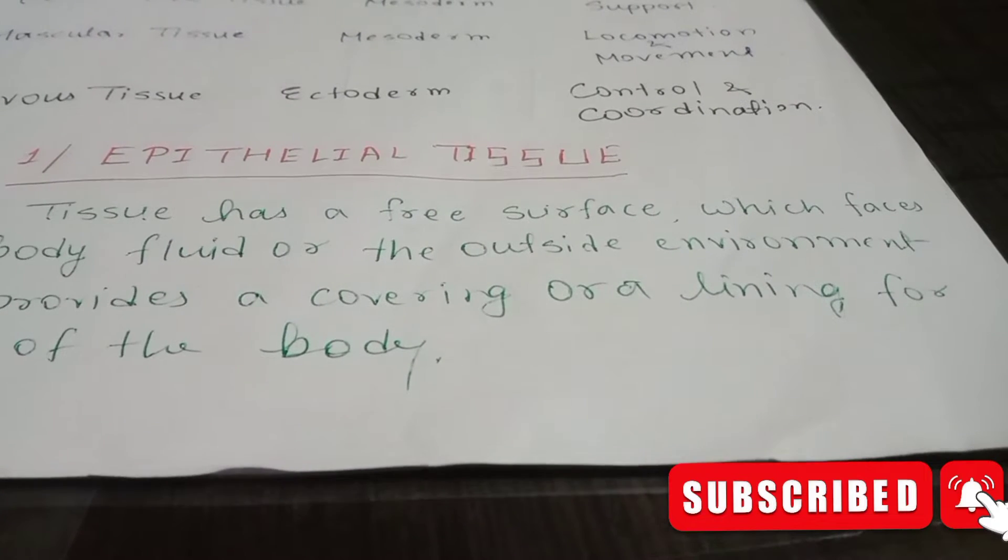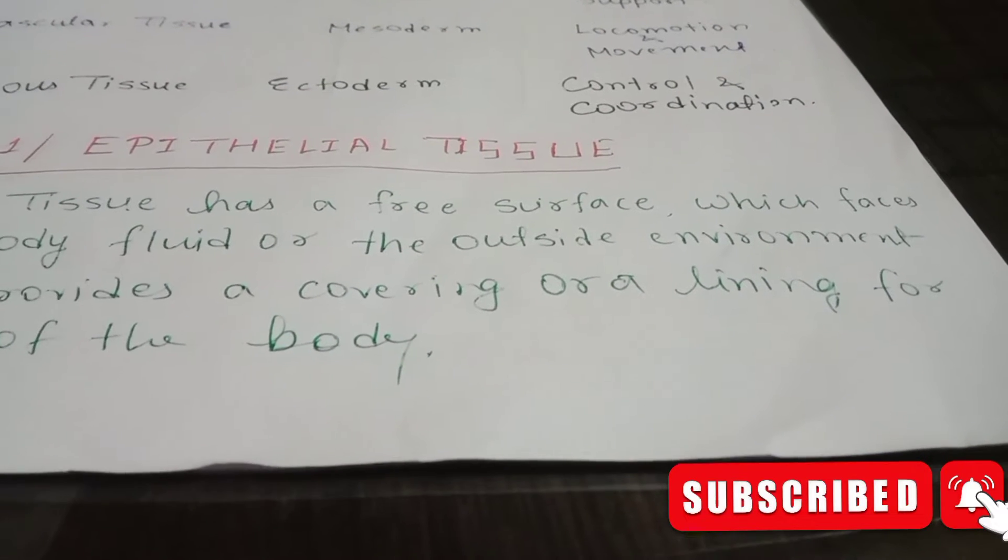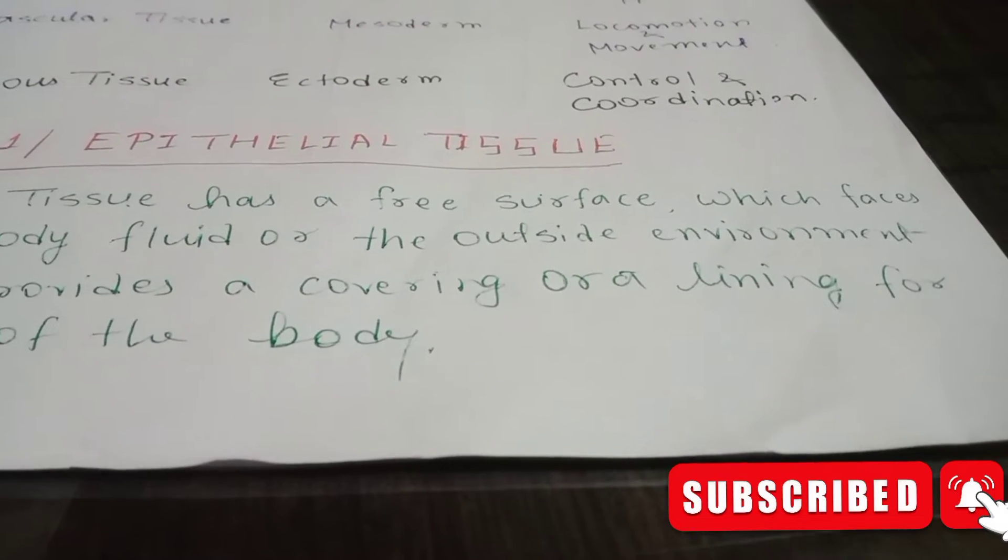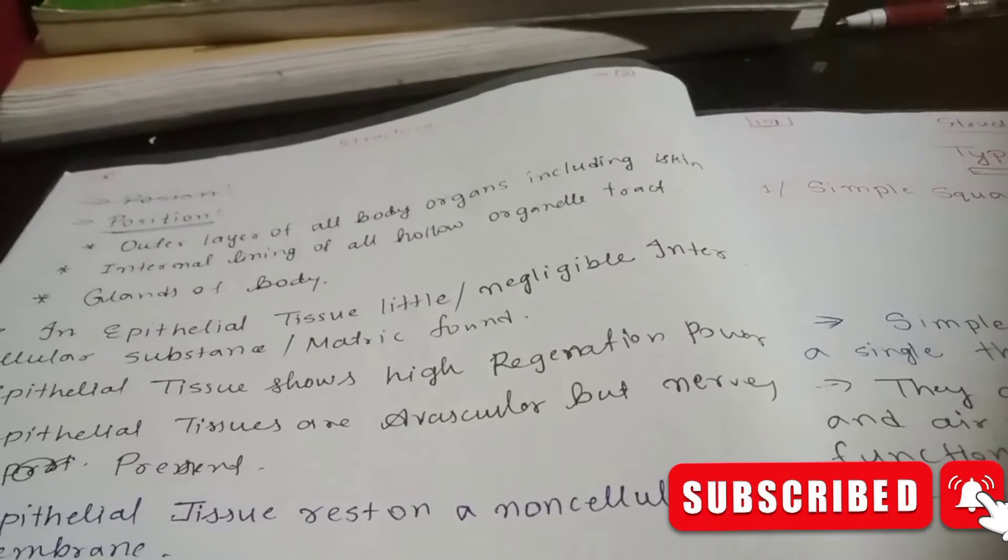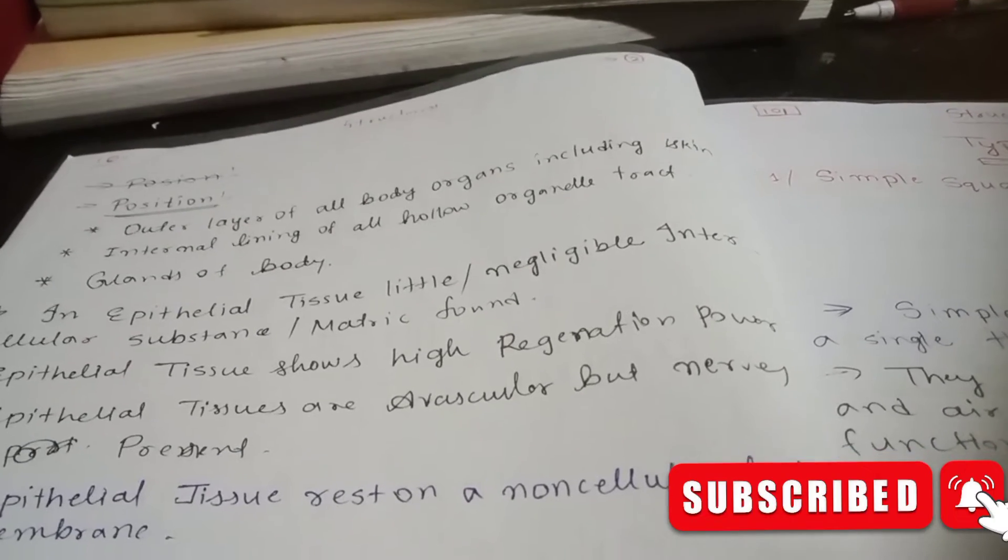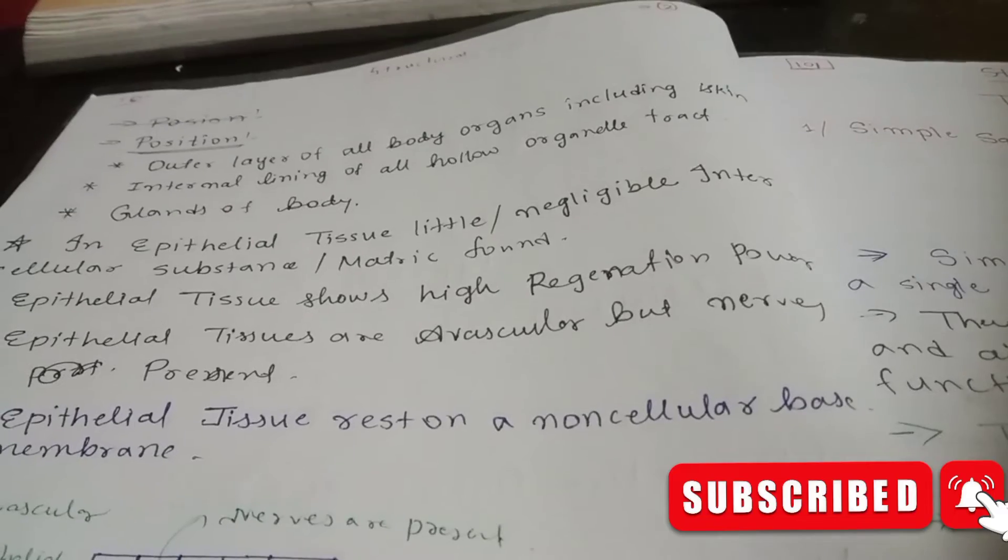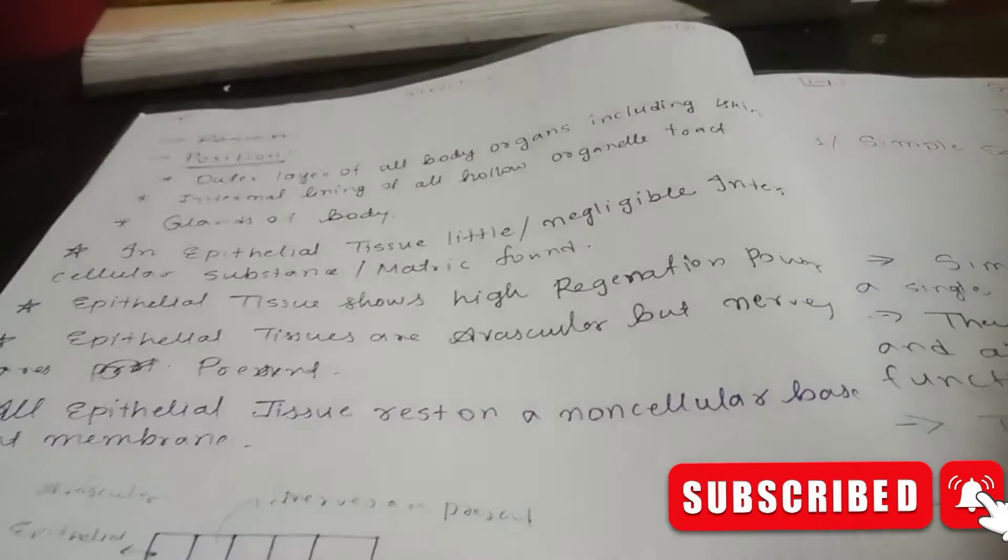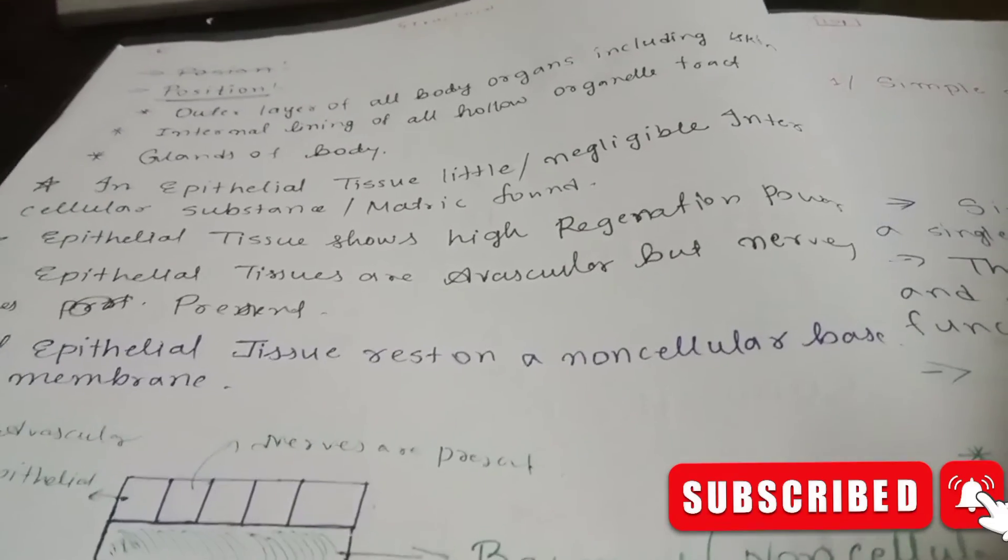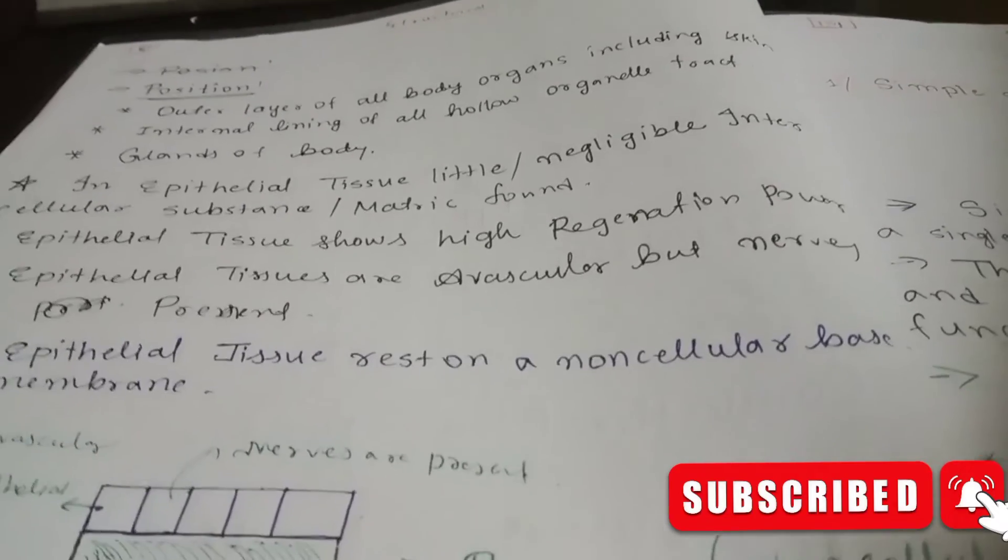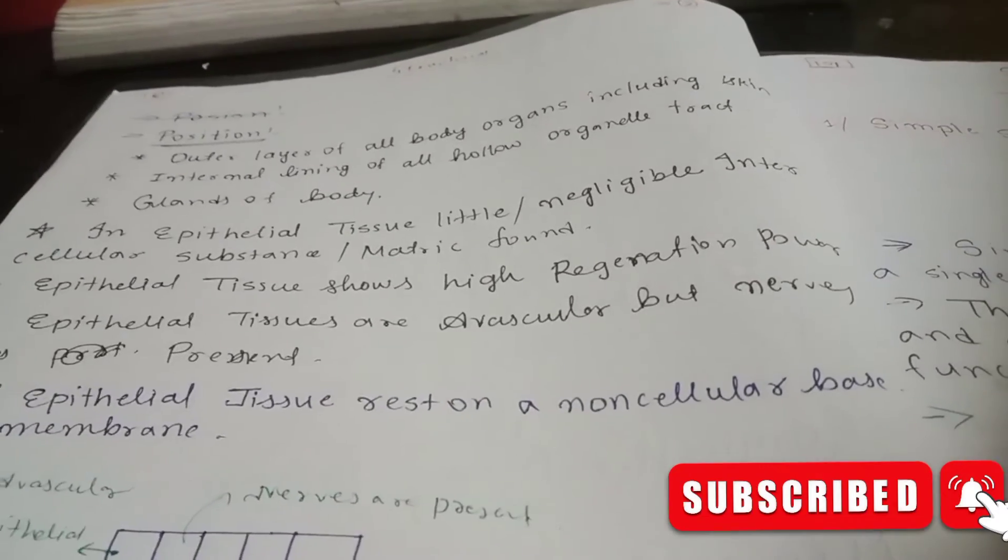It provides a covering or lining for some part of the body. Its key position is the outer layer of all body organs including the skin. This outer layer is epithelial tissue, including the skin.